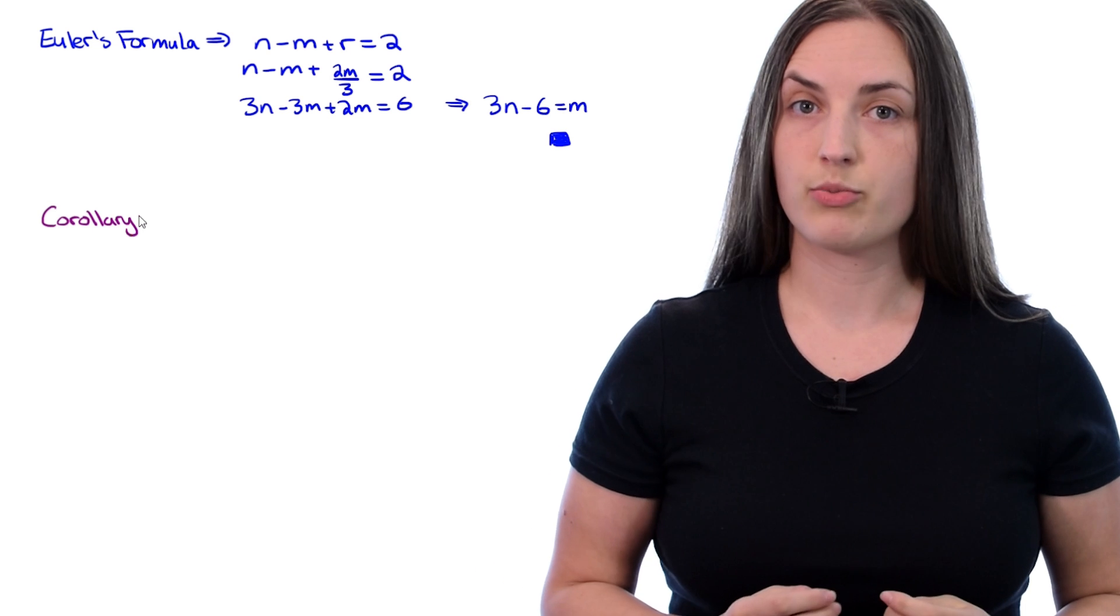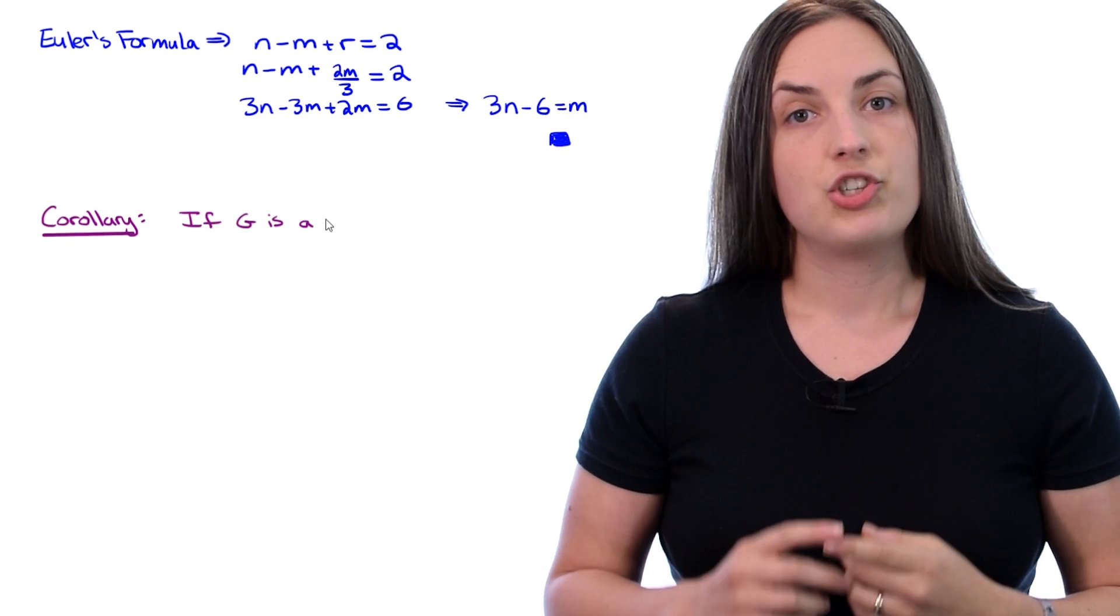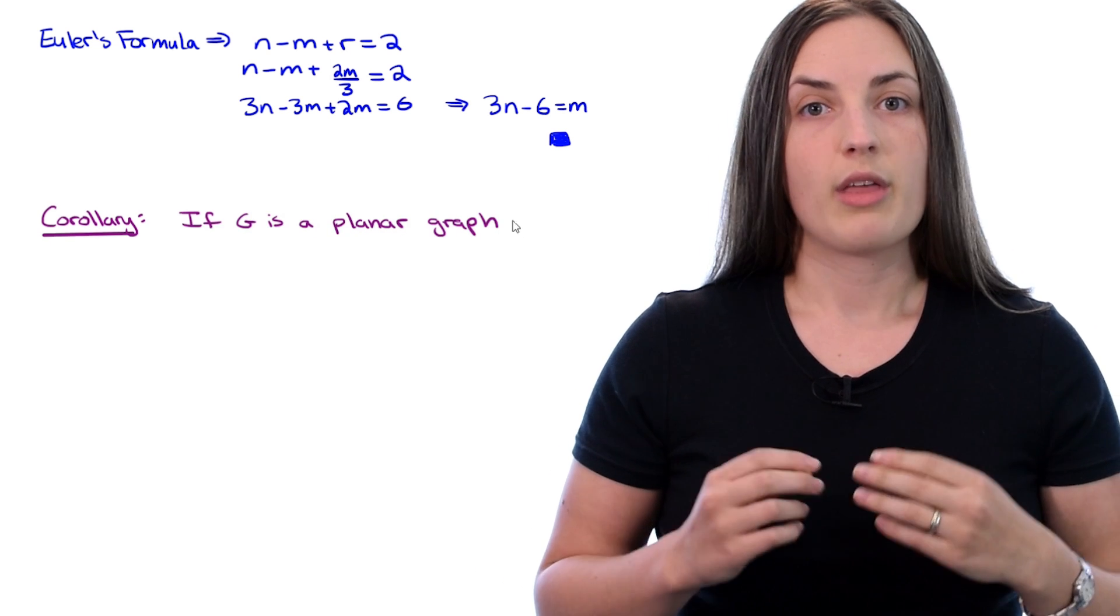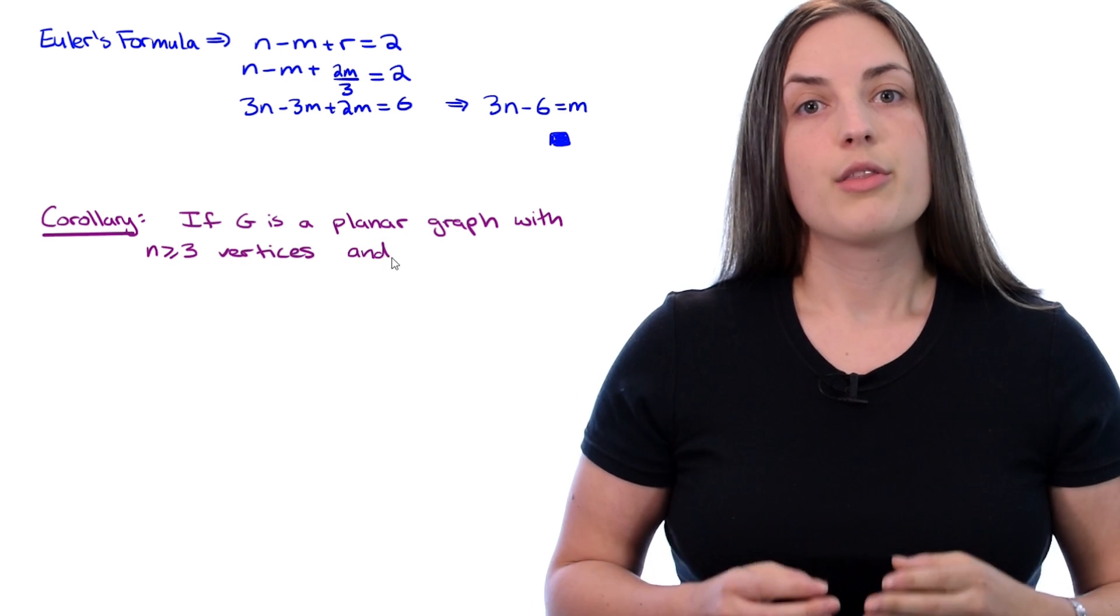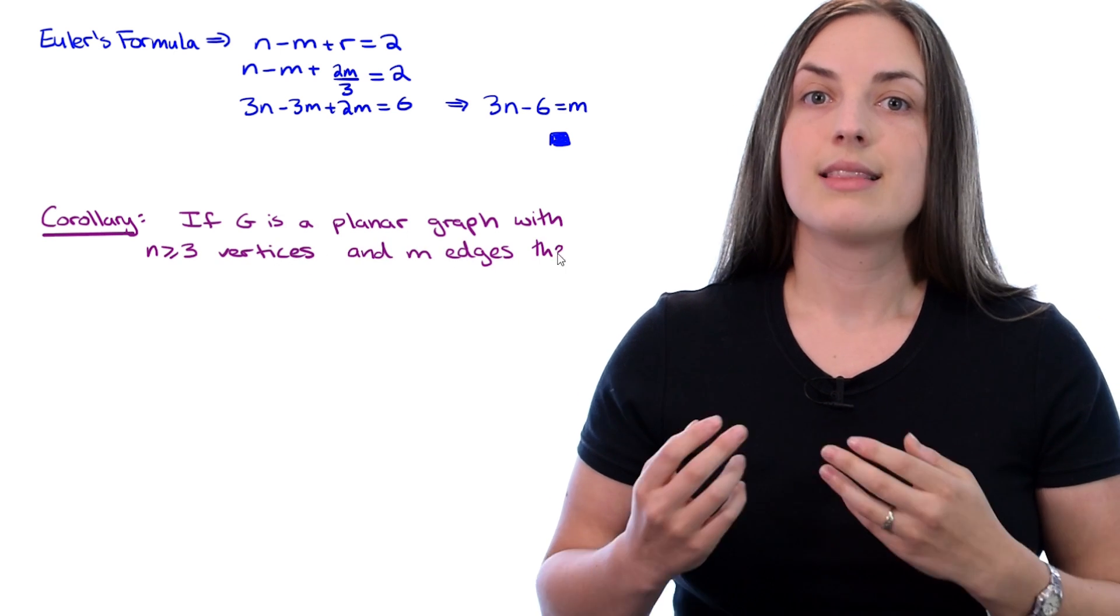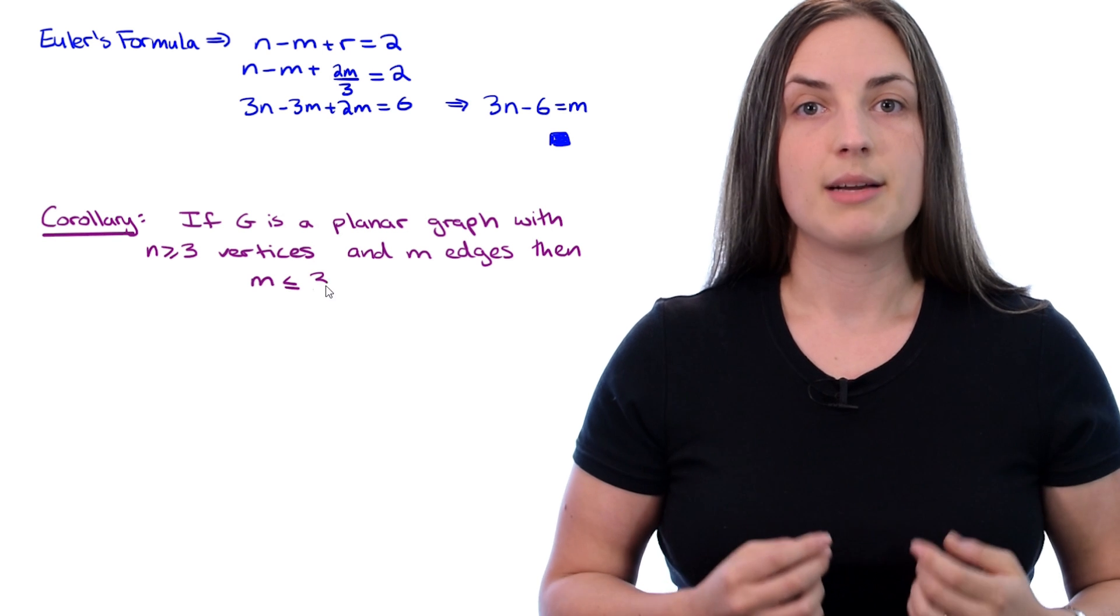A corollary of this result is if G is a planar graph with N vertices where N is at least 3, then the number of edges M is less than or equal to 3 times N minus 6.